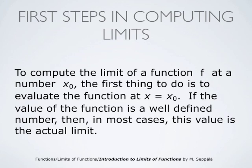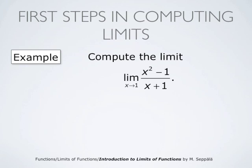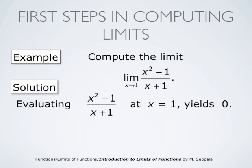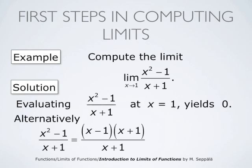This is true with the algebraic expressions that we have seen so far. For an example, let us compute the limit of x squared minus 1 divided by x plus 1 as x approaches 1. This can be evaluated at x equals 1. Evaluating x squared minus 1 divided by x plus 1 at x equals 1 yields 0. We see that more clearly by simplifying: x squared minus 1 divided by x plus 1 is x minus 1 times x plus 1, divided by x plus 1. x plus 1 cancels out, so x squared minus 1 divided by x plus 1 is simply x minus 1, and as x approaches 1, x minus 1 approaches 0.